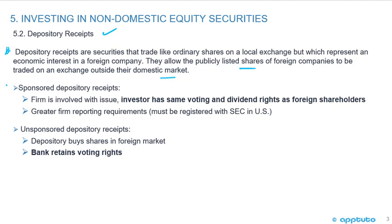We have two types of depository receipts: sponsored and unsponsored. With sponsored depository receipts, the firm is involved with the issue and the investor has the same voting and dividend rights as the foreign shareholders. There are greater firm reporting requirements and they must be registered with the SEC in the U.S. With unsponsored depository receipts, the depository buys shares in the foreign market, and the key point is that the bank retains voting rights.